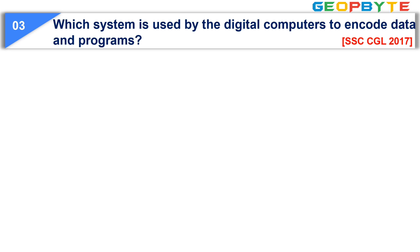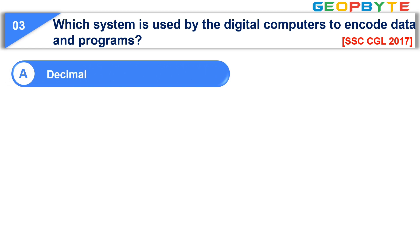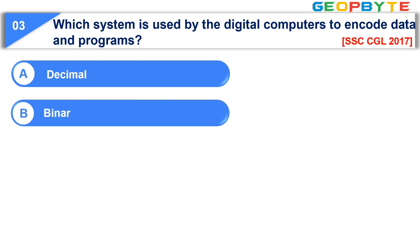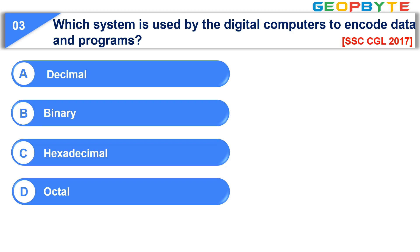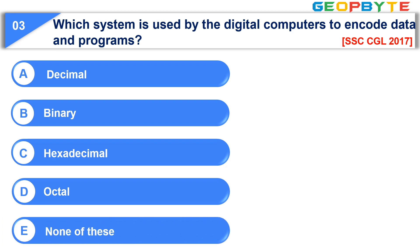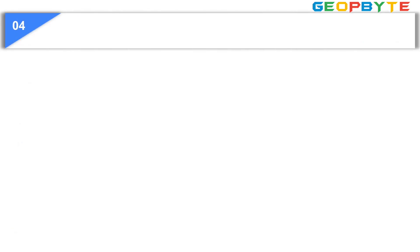Question number three: Which system is used by digital computers to encode data and programs? Option A: decimal; option B: binary; option C: hexadecimal; option D: octal; option E: none of these. The correct answer is option B: binary.